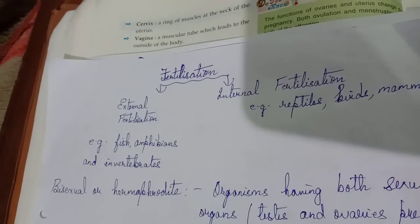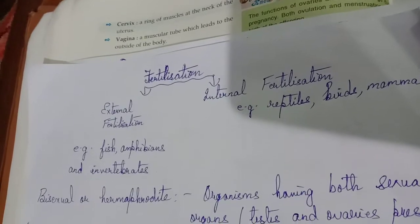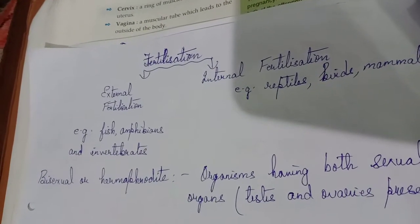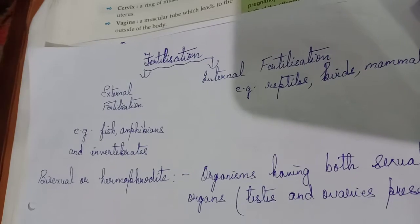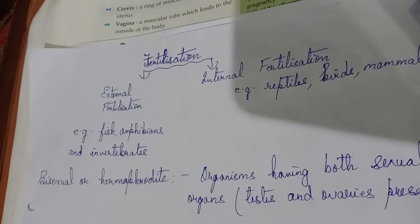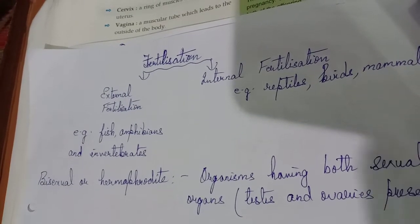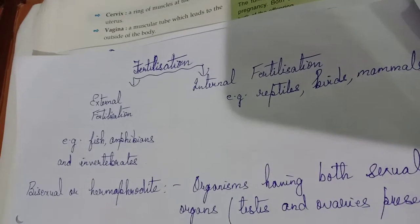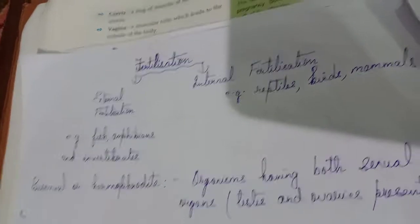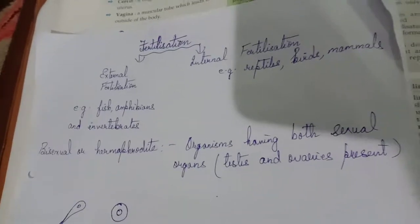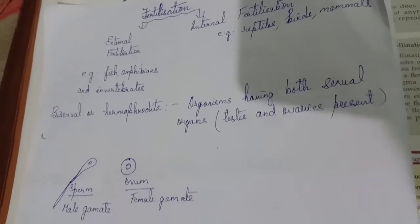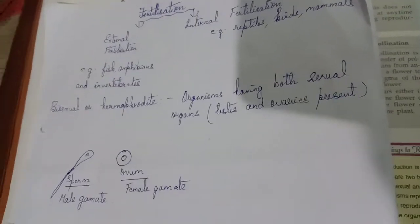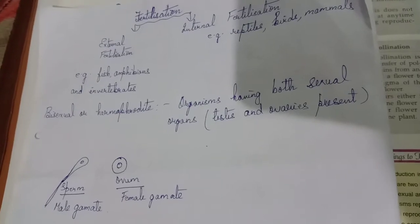For example, in frogs, during the breeding season, the male and female frog move towards water. The male frog sits on the female frog and discharges sperm. The eggs released by the female get fertilized in the water. This is how external fertilization takes place.